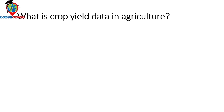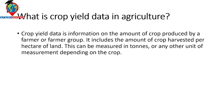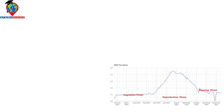First of all, we need to know what crop yield data is in agriculture. Crop yield prediction refers to the estimate of the amount of produce that a particular agricultural parcel or region is expected to yield during a growing season. It is the amount of the crop produced by the farmer or farmer group, and includes the amount of crop harvested per hectare of land. This can be measured in tons or any other unit depending on the crop.